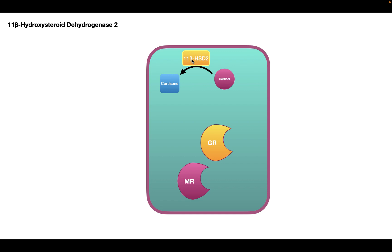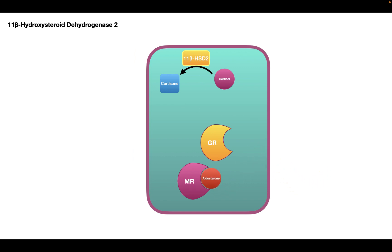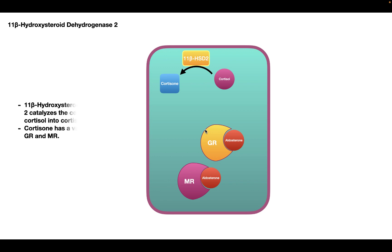The importance of this conversion is that cortisol can actually bind to both the glucocorticoid receptor and the mineralocorticoid receptor, and it has a very high affinity for both. If cortisol were left unconverted, it could bind to the mineralocorticoid receptor and have the same effects on principal cells as aldosterone. By converting cortisol to cortisone, 11-beta HSD2 prevents this, since cortisone has a much lower affinity for these receptors. So while aldosterone can bind to these receptors, cortisol is kept from doing so through the action of 11-beta HSD2.